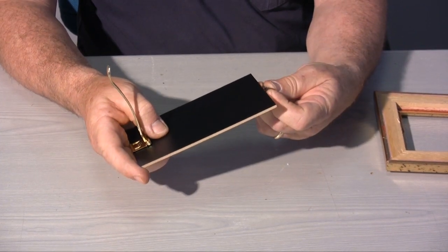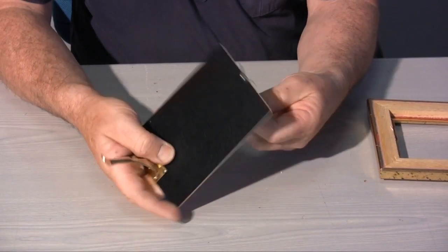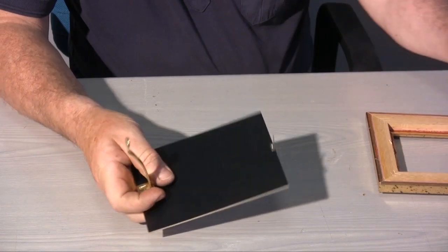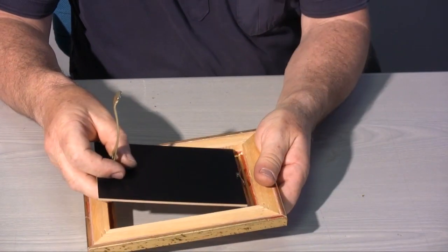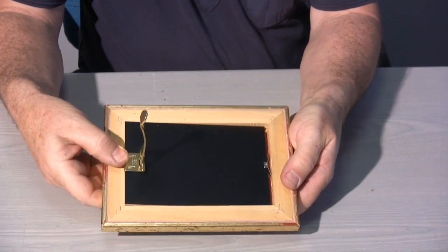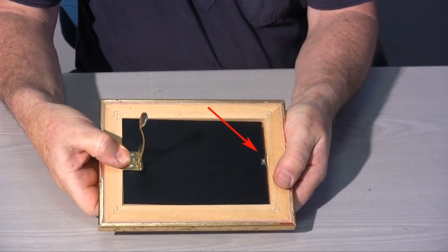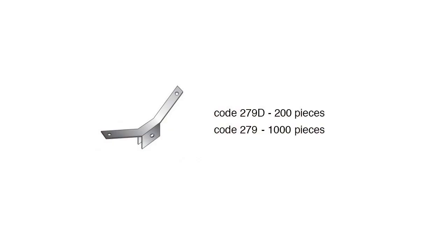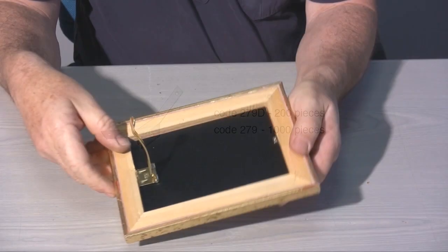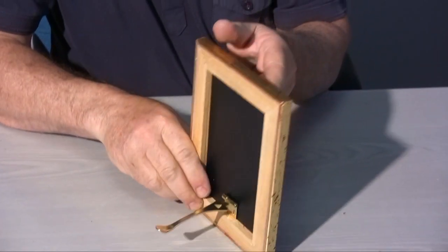There are two systems to fix the backing boards onto the frame. The first system is made up of a spring which is applied on the upper side of the backing board. The spring is provided by Rinaldin. It's a system specially made for small frames.